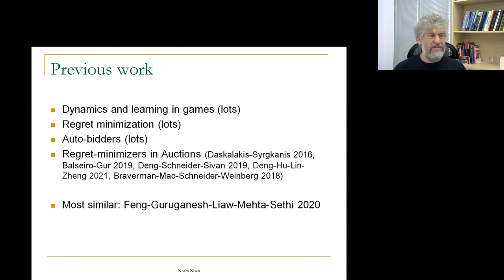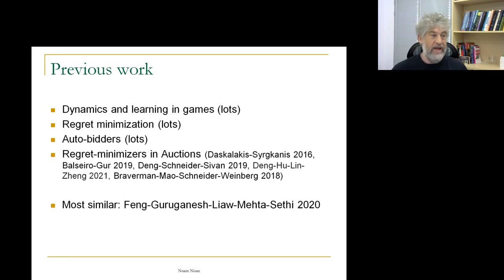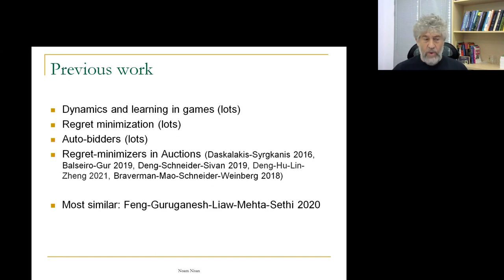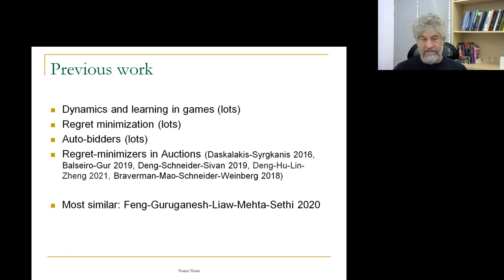There's lots of previous work. Lots of work on learning and dynamics in games, lots of work on regret minimization algorithms. There is also practical work on auto-bidders that companies have paid a lot of attention to. And there have been a few works specifically looking at regret minimizers in auctions — what happens when we take regret minimizers and auctions, sometimes from the auctioneer's perspective, sometimes one-sided, various variants. There is one work that is very similar to ours in setting from two years ago, but the basic difference is that they considered regret minimizers that start by learning the distribution of the other player very well, which really changes what happens.